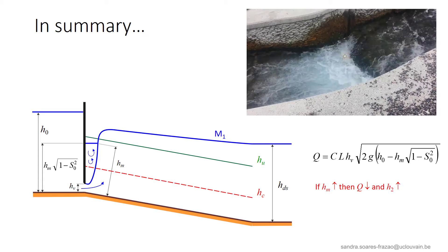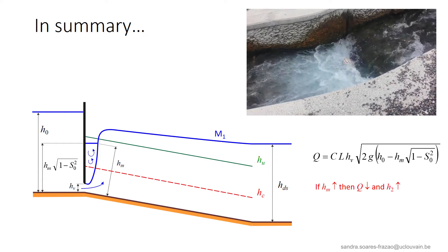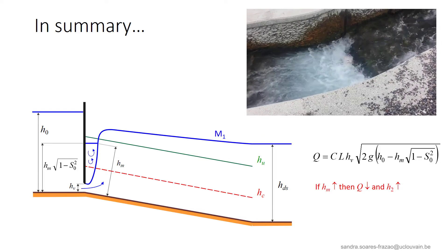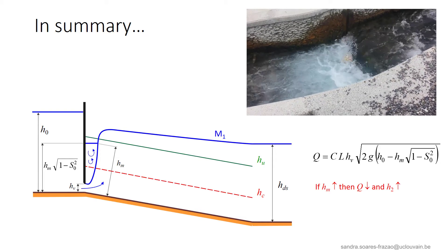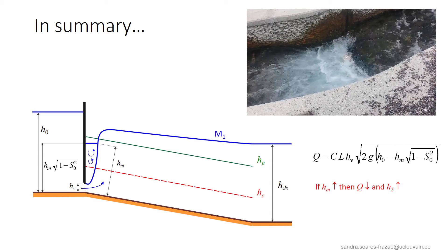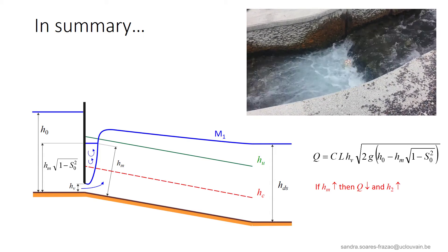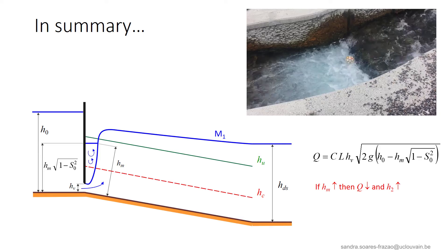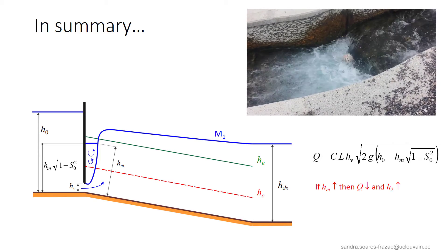This will influence the subcritical flow profile that develops downstream of the hydraulic jump, in such a way that a trial and error procedure will be adopted. So we will see in the next lesson some useful rules that can guide this trial and error procedure. Goodbye!